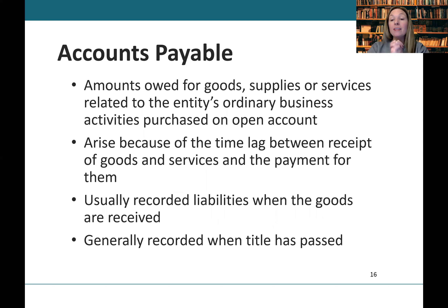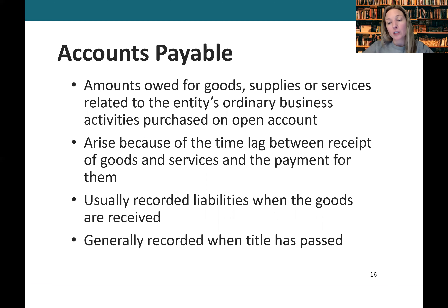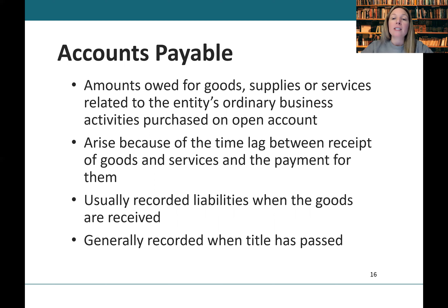Accounts payable is probably the most common current liability. This is where we record amounts due for goods, supplies, or services related to the entity's ordinary business activities, purchased on open account — meaning each invoice establishes the value of the goods due rather than it being under one contract. This liability arises because of the time lag between the receipt of the goods and the payment for them, and the liability is recorded when the title passes, normally when the goods are received.